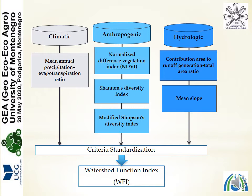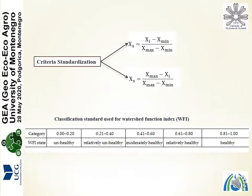After the calculation of these criteria, we performed standardization using the provided formulas. Then, using the geometric mean, we computed the watershed function index for 36 sub-watersheds. The classification standards are also applied here, as given in the table.